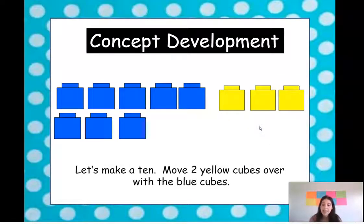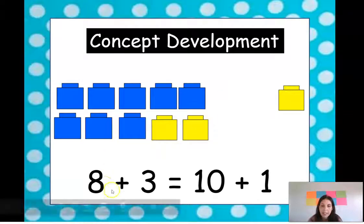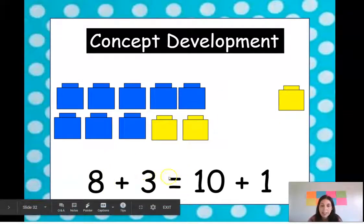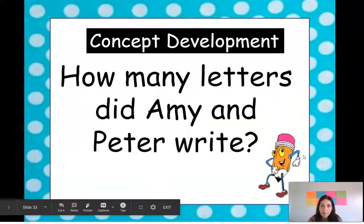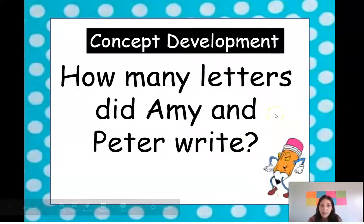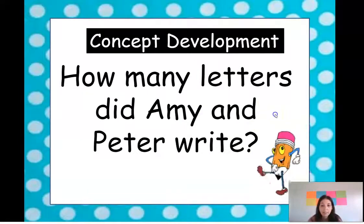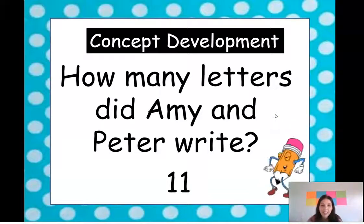Now we want to make a ten. So we're going to move these two cubes over here to make a group of ten. Okay so now eight plus three is the same as ten plus one. They equal the same. So how many letters did Amy and Peter write? Eleven. Very good.